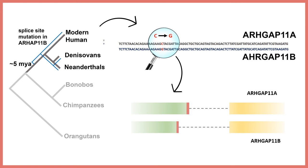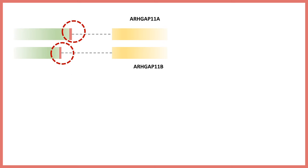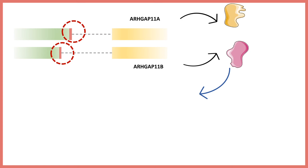In RGAP11A a particular splice donor site is used, whereas in RGAP11B a different splice site is selected, leading to a completely different protein product. RGAP11B is specific to humans — not present in other primates like chimpanzees or baboons — but is present in Neanderthals, Denisovans, and modern humans. This alternative splice site choice, resulting from a single mutation, had a huge molecular impact.